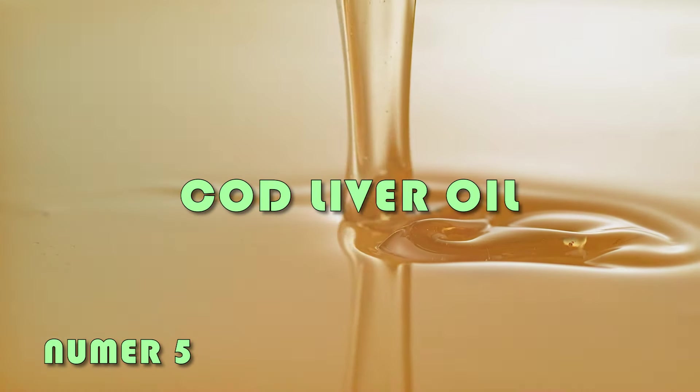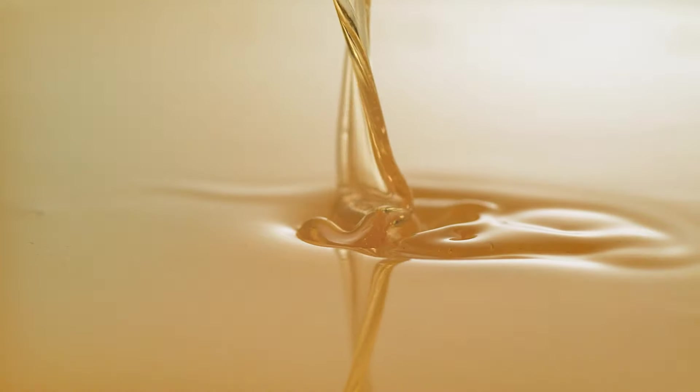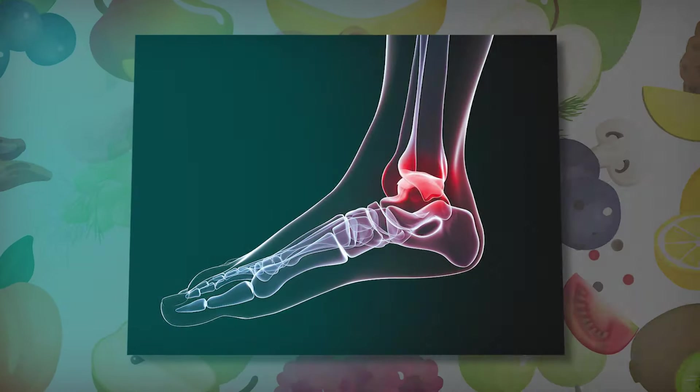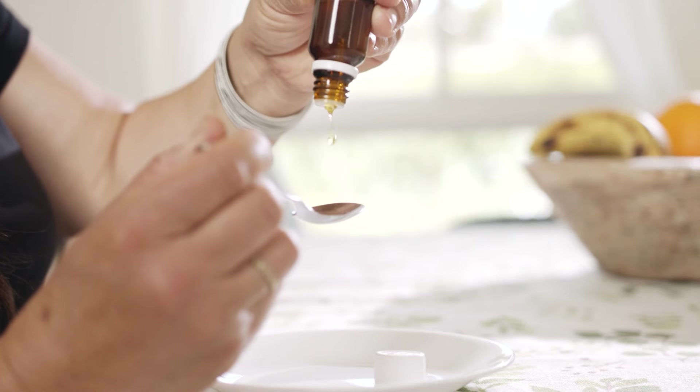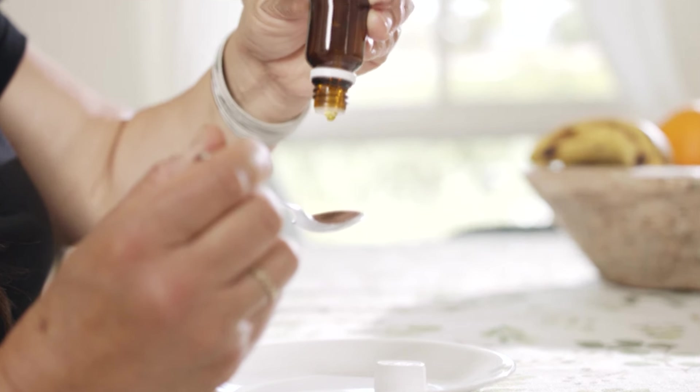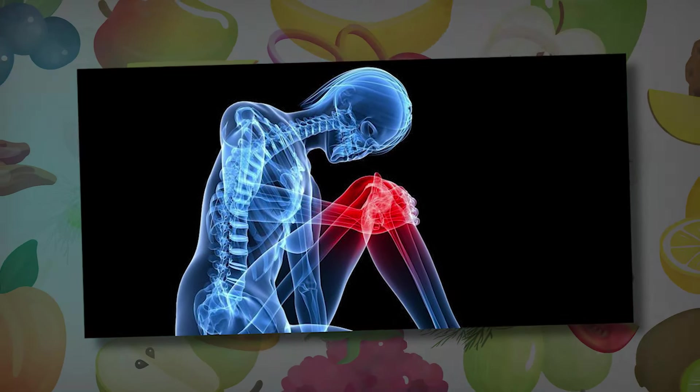Number 5: Cod Liver Oil. Taking one to two teaspoons of virgin cod liver oil daily is one of the greatest ways over the age of 50 to reduce inflammation and strengthen your joints and bones. The active omega-3 fatty acids in this golden liquid help reduce discomfort and lubricate joints.